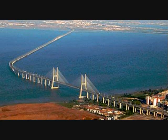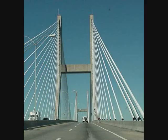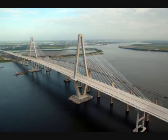Cable-stay bridges, like suspension bridges, are held up by cables. They consist of towers with cables supporting the bridge deck that exerts the force towards the towers. Unlike suspension bridges, the tension in the cables is higher and less cable is required. The towers effectively stabilize the structure by means of the cables.